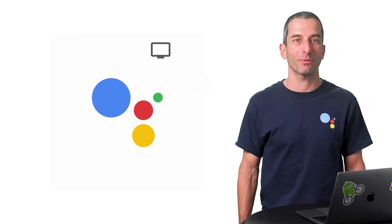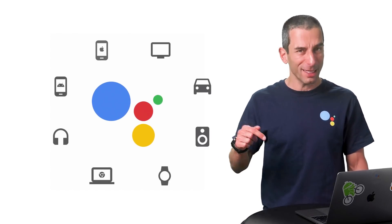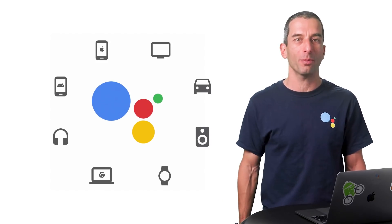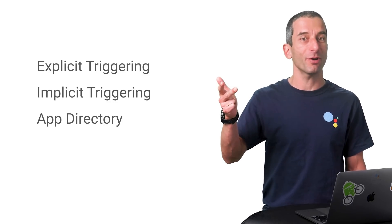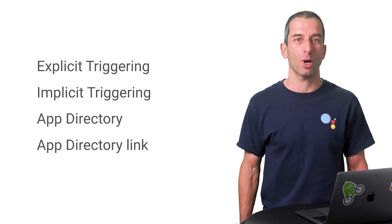Hi, I'm Ido Green, a developer advocate for Actions on Google. Did you know that building apps for the Google Assistant can reach users on millions of devices? In this video, I'm going to show you how to get more users to your app for the Google Assistant. There are four ways: explicit triggering, implicit triggering, discovering the Google Assistant Directory, and clicking on the Assistant Directory link. Let's go deeper on each one.